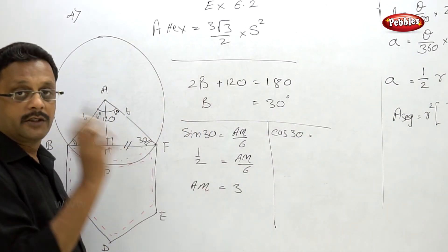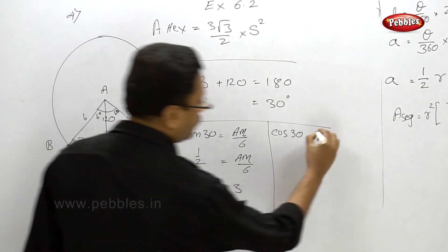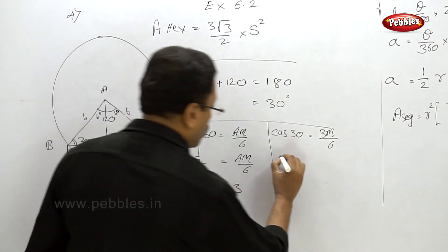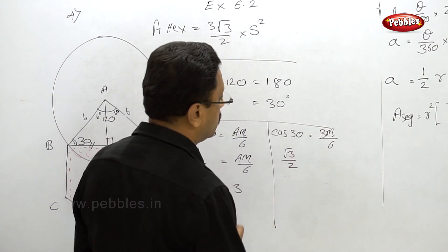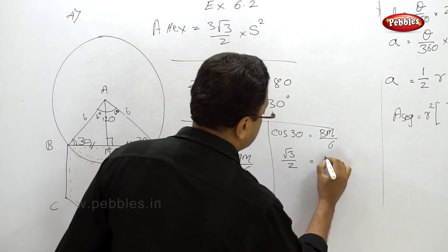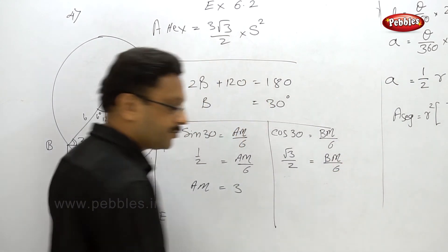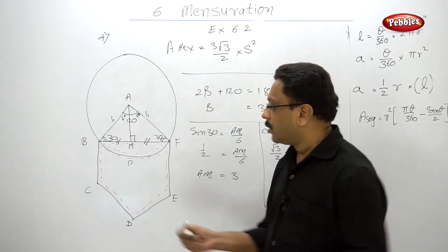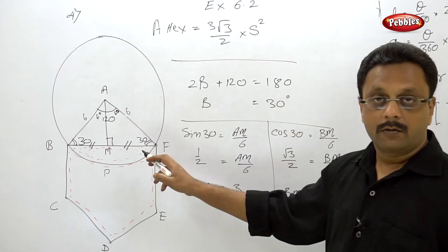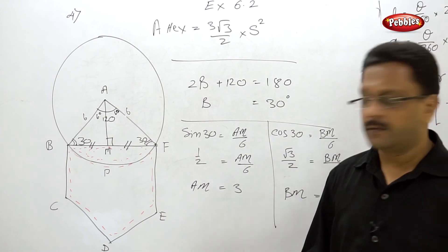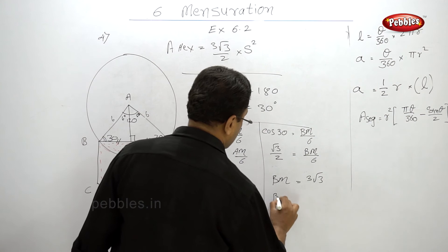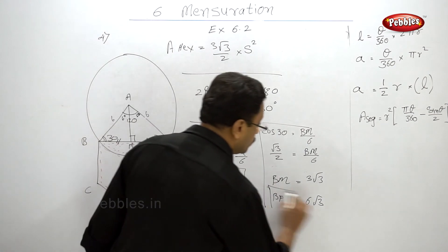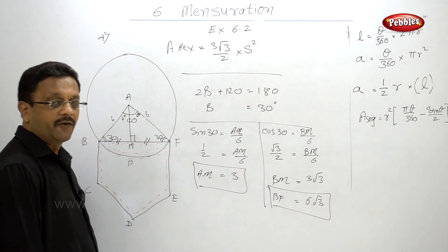cos 30 = BM/6. cos 30 = √3/2, so BM = 3√3. Therefore BF = 2 × BM = 6√3. Now we know the height AM = 3 and the base BF = 6√3, so we can find the area of the triangle.